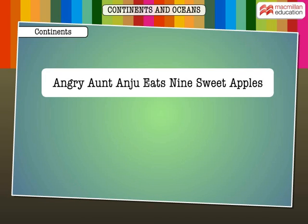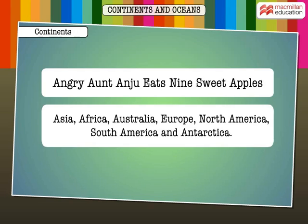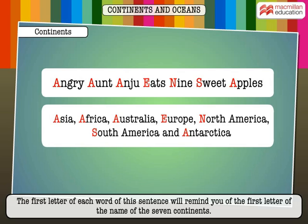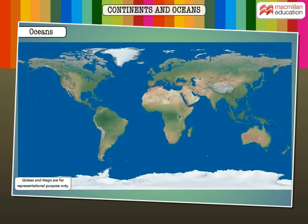"Angry Aunt Anju Eats Nine Sweet Apples" is a simple sentence to remember the seven continents. The first letter of each word of the sentence reminds you of the first letter of the name of each of the seven continents.